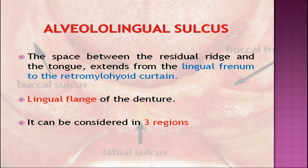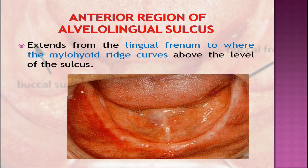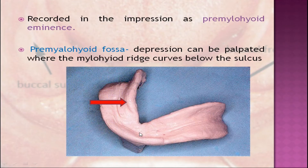The alveolingual sulcus is a space between the residual ridge and the tongue, extending from the lingual frenum to the retromylohyoid curtain. Part of it is available for the lingual flange of the denture. It can be considered in three regions: the anterior region, the middle region, and the posterior part. The anterior region extends from the lingual frenum to where the mylohyoid muscle curves above the level of the sulcus.